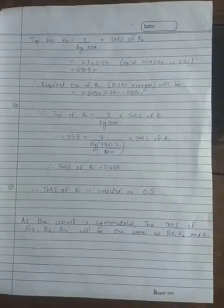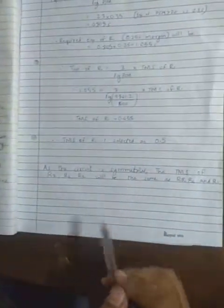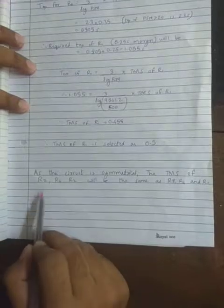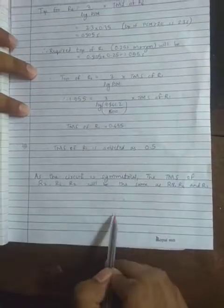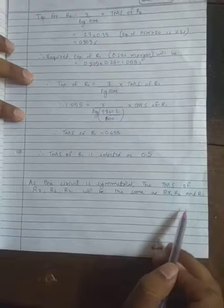And as we can see, the circuit is symmetrical. So we can straight away say that the TMS for R7, R6, R2 will be the same as TMS of R8, R4 and R1 respectively.